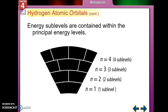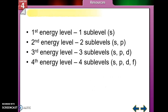Each of those sub-levels has a specific designation. On the first energy level, it's called the S sub-level. On the second energy level, you have the S sub-level and also the P sub-level. The third energy level adds the D sub-level, and the fourth energy level has the S, P, D, and F sub-levels.